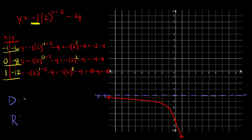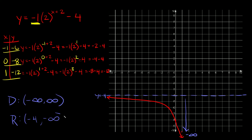For domain and range: the domain is again all real numbers from negative infinity to positive infinity. The range changes a bit this time — we get really close to negative four but never touch it, so we use a parenthesis at negative four, and the graph goes all the way down towards negative infinity.